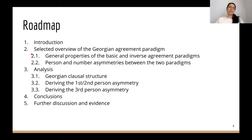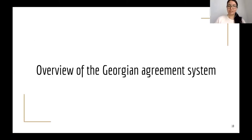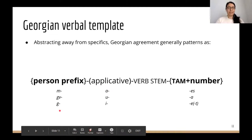Third persons cross-linguistically don't require the same licensing as first or second persons, so in the inverse they don't need to move. The intervener in that case is little v itself, which is targeted for agreement by the person probe on T. Once that initial agree relation is established between T and little v, a subsequent search by the number probe on T finds the third person plural subject in Spec-ApplP. As a road map: I'll give a selected overview of the Georgian agreement paradigm, zoom into the person and number asymmetries, and then head into analysis and conclusions.